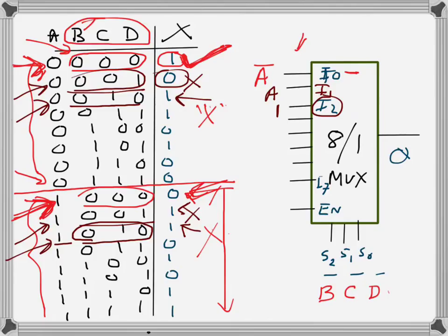For i3, selected when BCD=011: looking at BCD=011 in the truth table, when A=0 the output is 1, and when A=1 the output is 0. Again the output is inverted relative to A, so I will connect A-bar to i3.